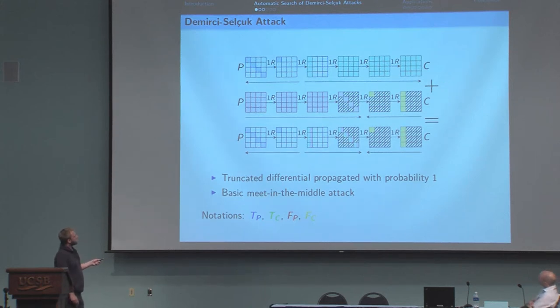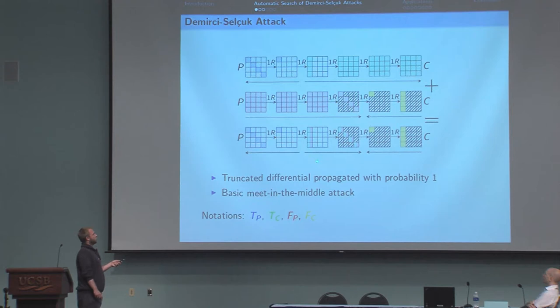Then, the corresponding Demirci-Selçuk attack is here. The distinguisher part—the active variables of the distinguisher part are exactly the intersection between the red variables here and the green variables here.